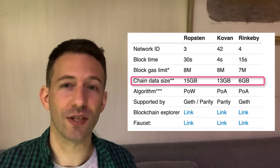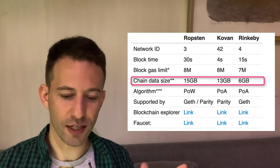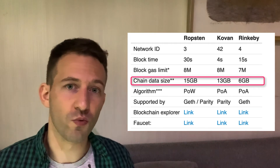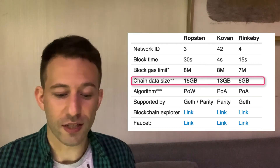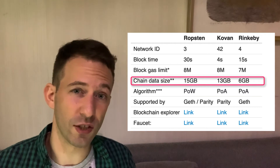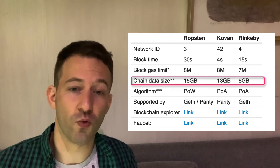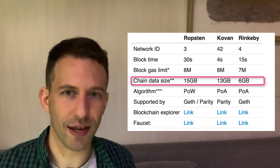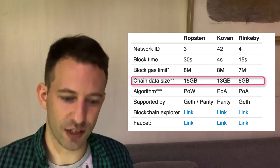Then you have the chain data size — how big is the data of this blockchain? For Ropsten it's 15 GB, Kovan 13 GB, and Rinkeby 6 GB. If you wanted to run an Ethereum node for one of these testnets on your computer you could absolutely do it, but this is not very important because most developers don't run their own Ethereum node for public testnets. They will use an API service like Infura that runs these nodes for them, so you can pretty much ignore this parameter.